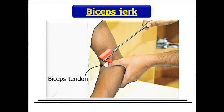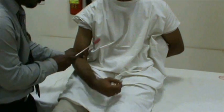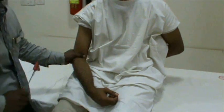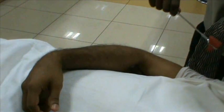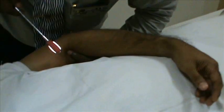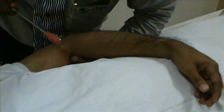For eliciting biceps jerk, position the subject's arm correctly. Feel for the biceps tendon and place your thumb firmly on it. Strike your thumb with the help of a knee hammer. Observe for the contraction of biceps and the flexion at the elbow.